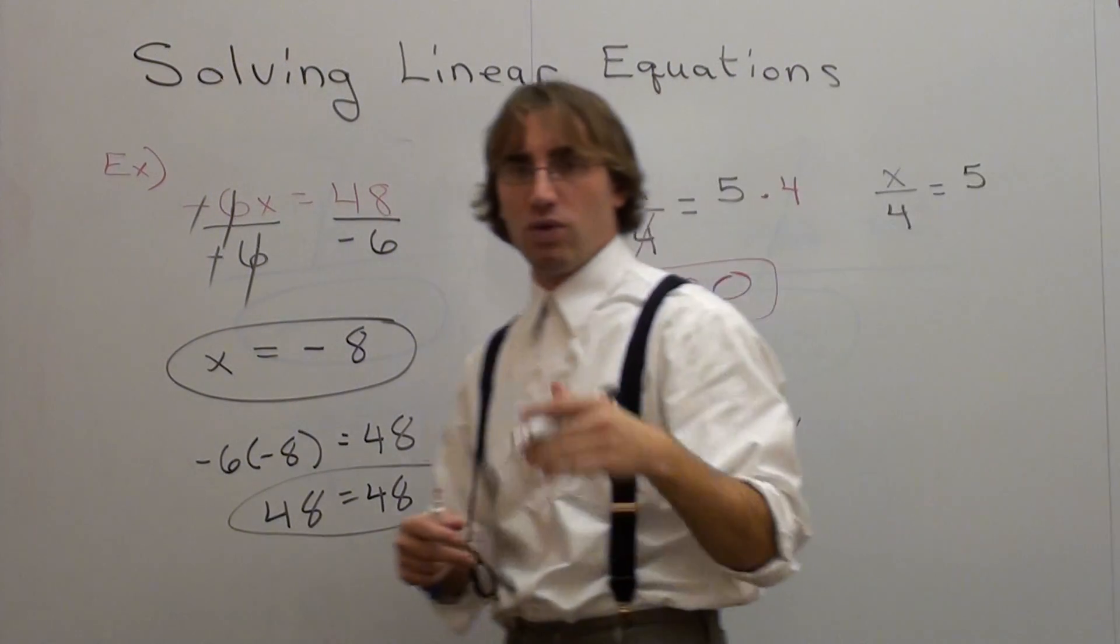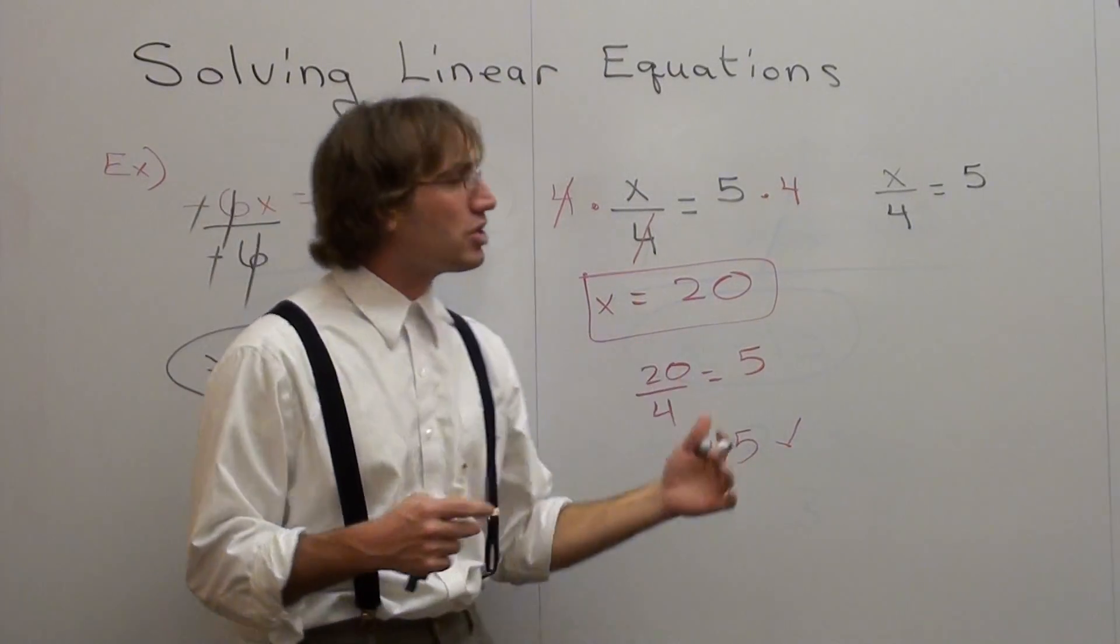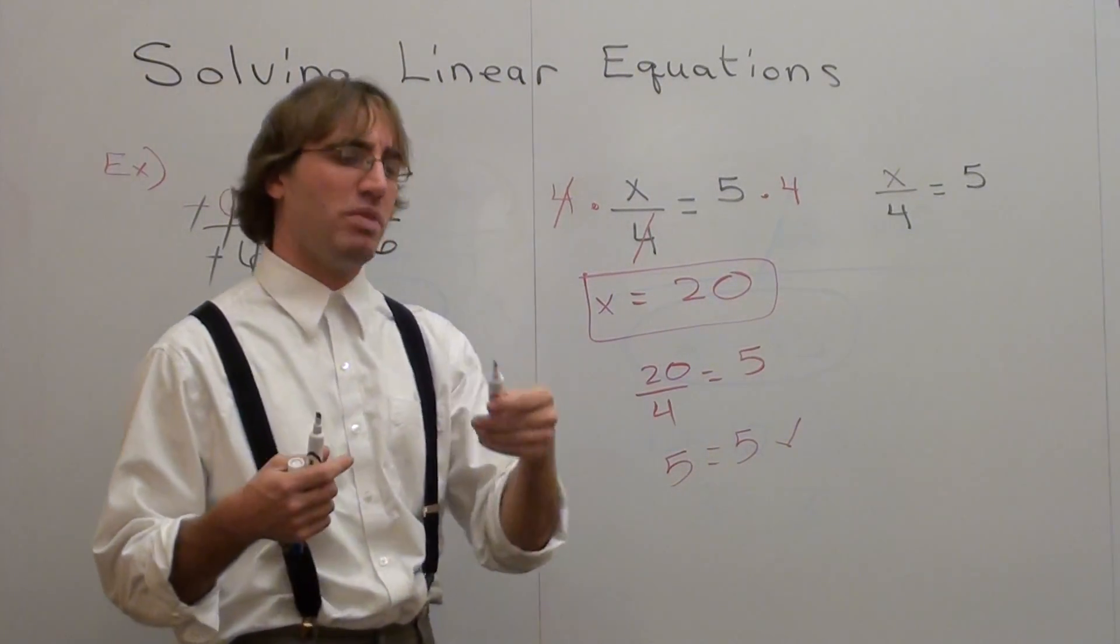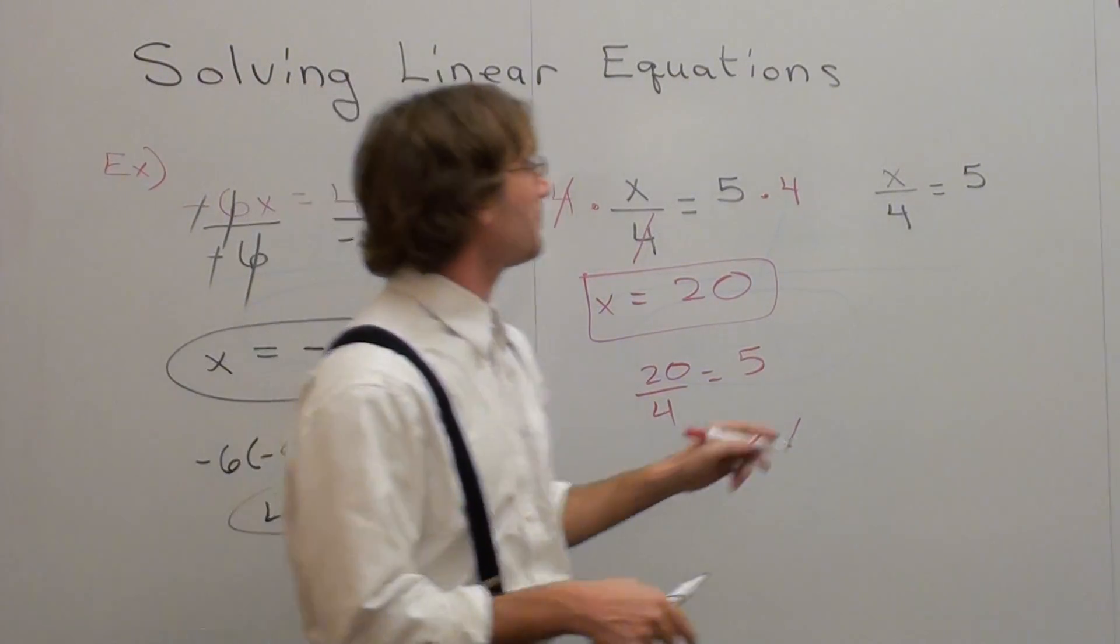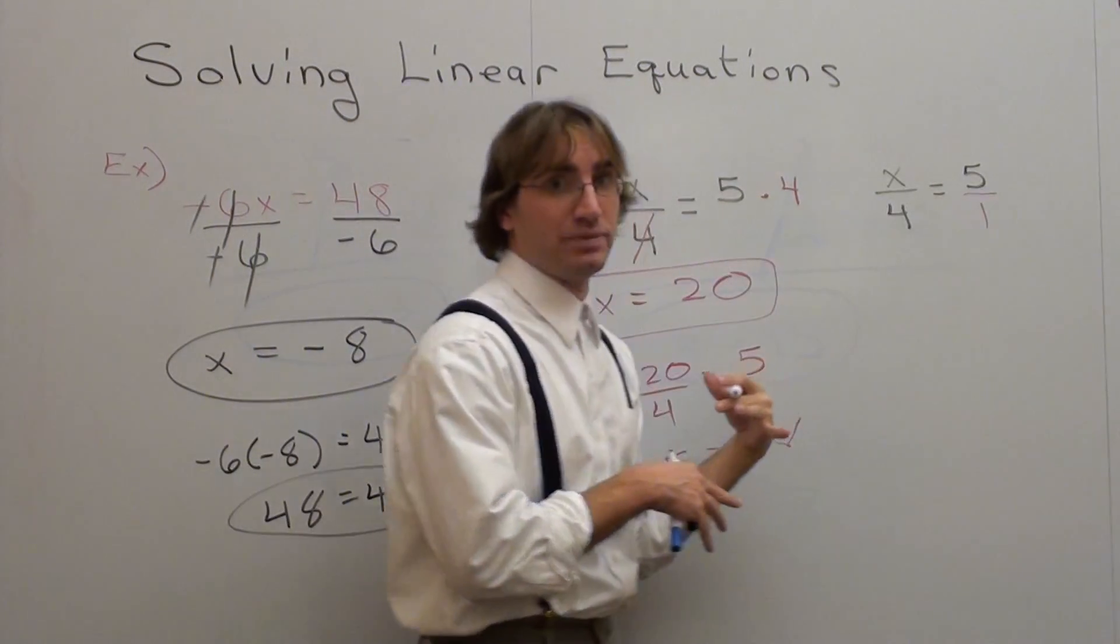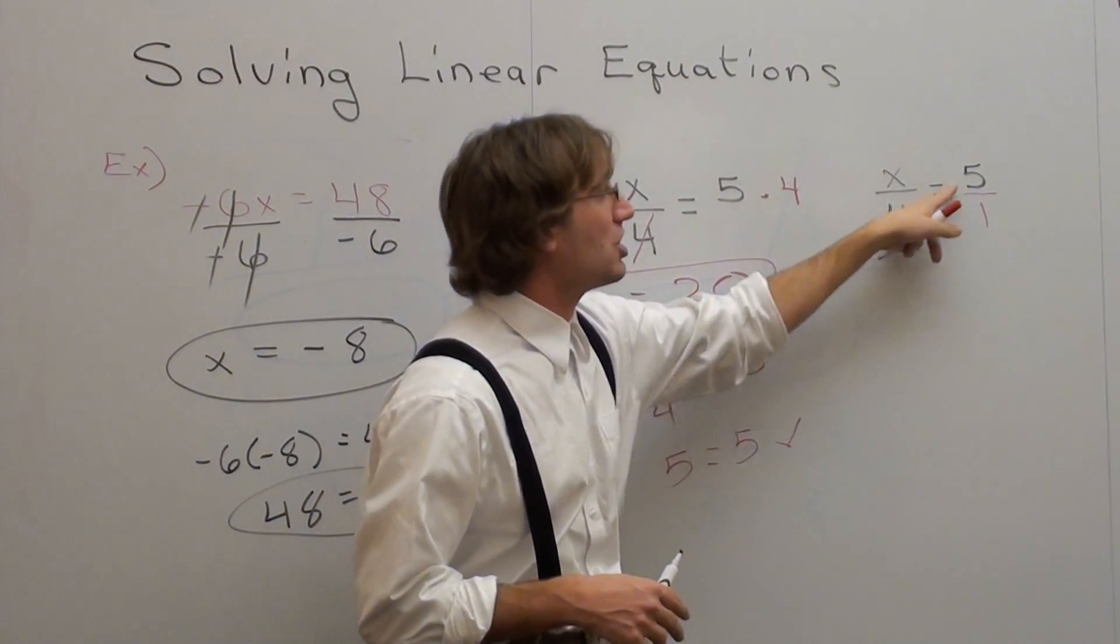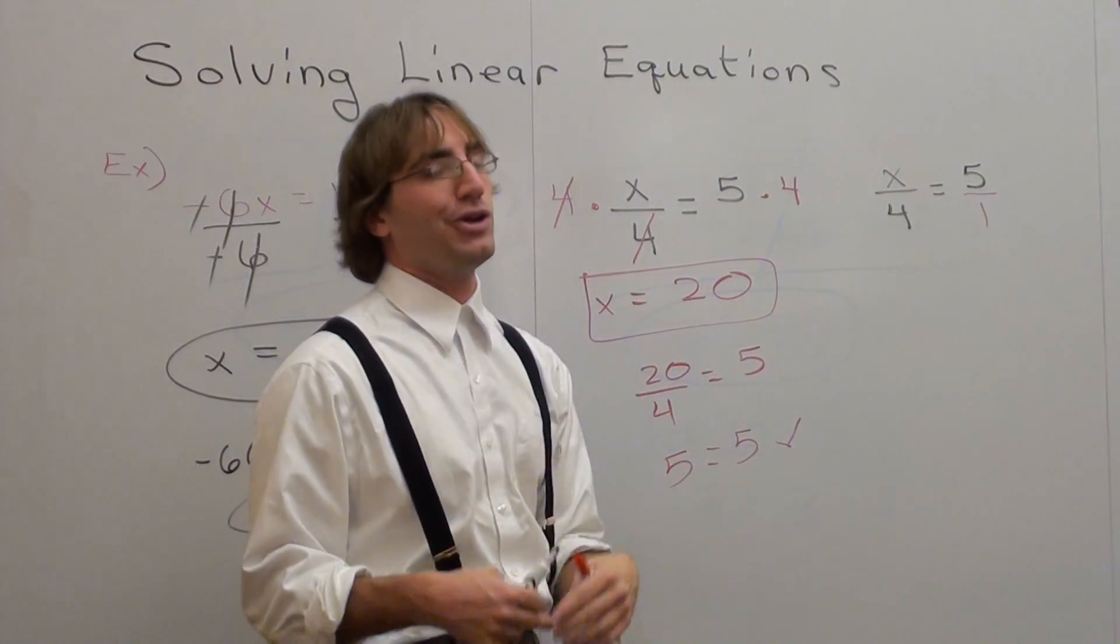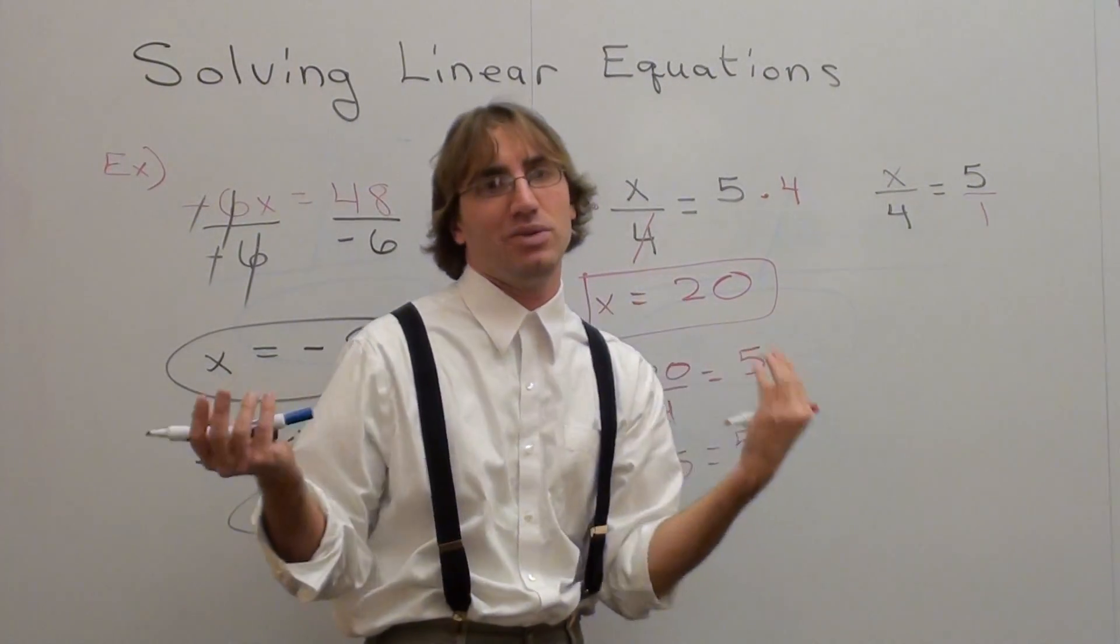You have x divided by 4 equals 5. You want to solve for x. It's very simple. Students like this because it reminds them of some procedures that they did in elementary school. Put a 1 over the other fraction. I've got one fraction equaling another. When you see a problem like that, you just cross multiply. Or use the cross product property, but we just say cross multiply.